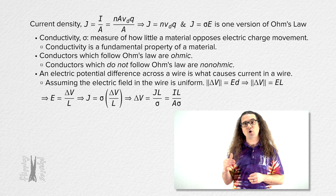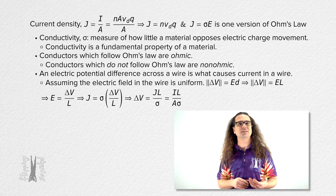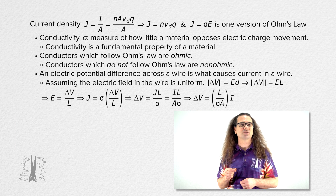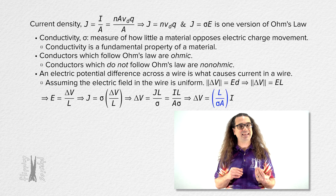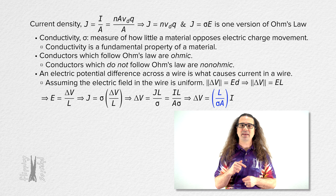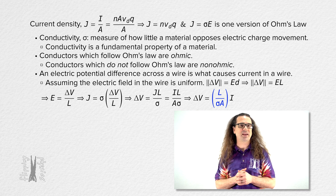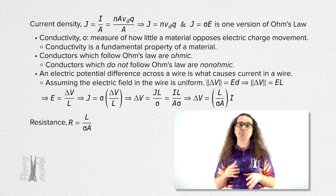We can substitute current over wire cross-sectional area in for current density and solve for the electric potential difference across the wire. Notice that, parenthetically, in the electric potential difference equation, we have wire length over the quantity conductivity times cross-sectional area. This is defined as the resistance of the wire. The symbol for resistance is capital R.